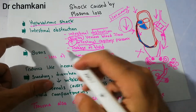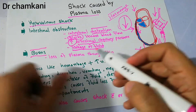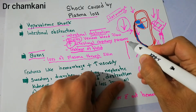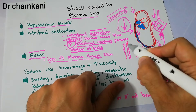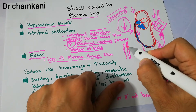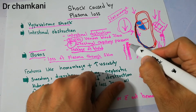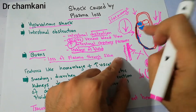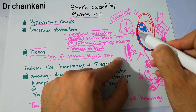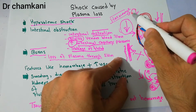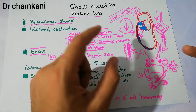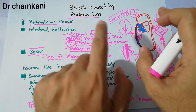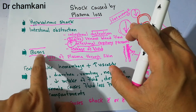Another kind of plasma loss occurs in burns. There is direct loss of plasma through the skin — the skin cells normally protect against plasma loss, but in burns these cells are damaged. When damaged, plasma is lost directly from the skin, ultimately leading to decreased blood volume, decreased venous return, decreased arterial pressure, decreased nutrient supply to cells, and shock — also a hypovolemic shock due to plasma loss.